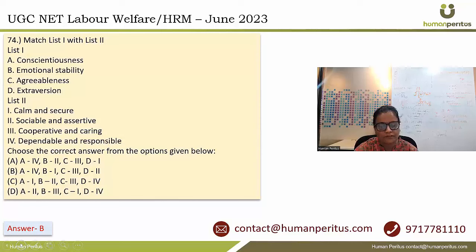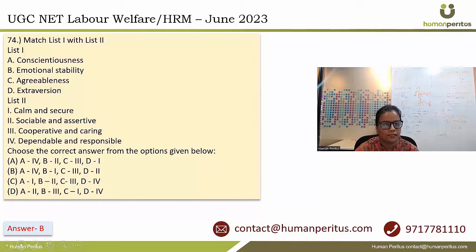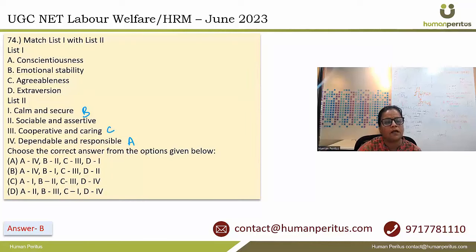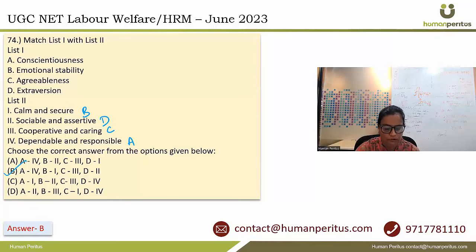Match list 1 with list 2 on the Big Five model of personality. Conscientiousness goes with dependable and responsible people. Emotional stability goes with calm and secure personalities. Agreeableness goes with cooperative and caring behavior. Extraversion goes with sociable and assertive personalities. The correct answer is option B.